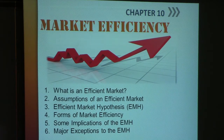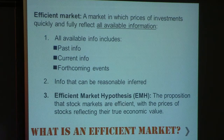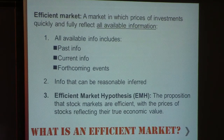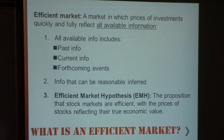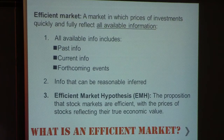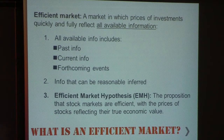An efficient market is a market in which prices of all investments quickly and fully reflect all available information. Companies provide different types of information to the public through the media at different stages of their life — monthly, quarterly, and annually through an annual report. All of these different pieces of information, plus any ad hoc information such as a change of president, fraud charges, or lawsuits, change the price of stocks in the market.